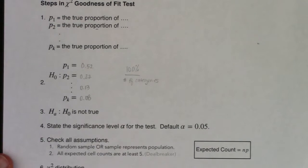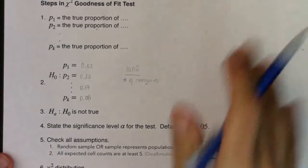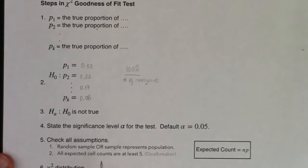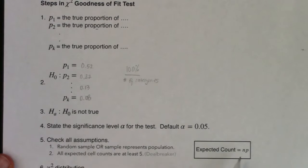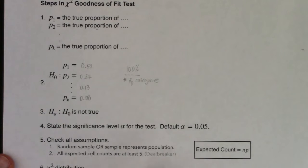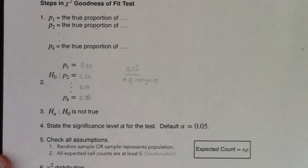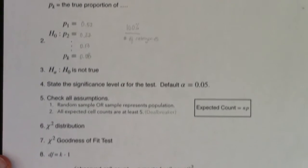We default to an alpha level of 5% unless one is given. The deal-breaker assumption is that expected cell counts must be greater than or equal to five, calculated using n times p. We always want a random sample or a sample representing your population.